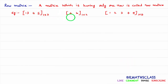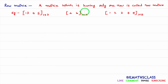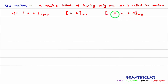Observe this matrix — it is of order 1 by 2. How many rows are there? Only one row is present, so this is an example of a row matrix. This matrix is of order 1 by 5: one row and five columns. This matrix has only one row, so it is called a row matrix.